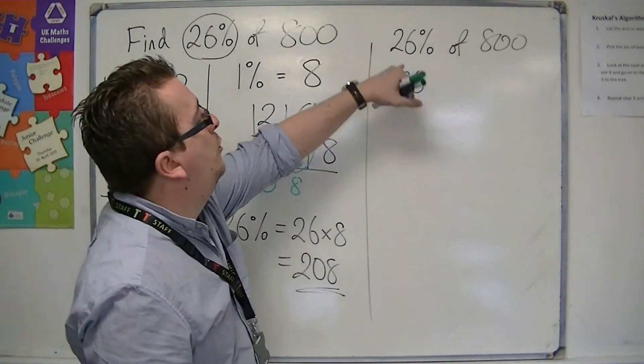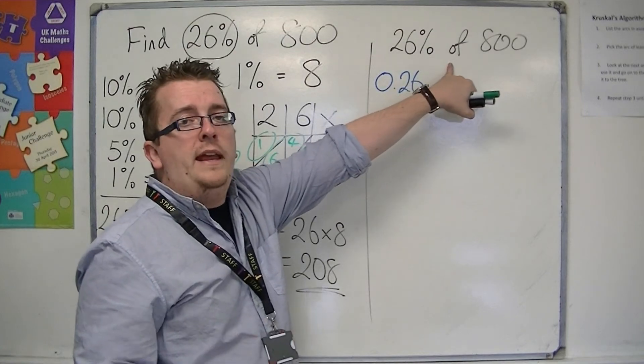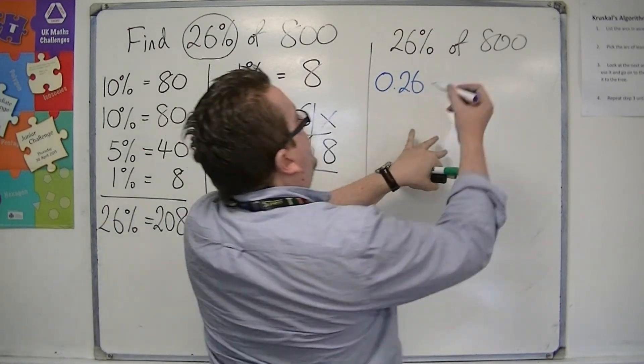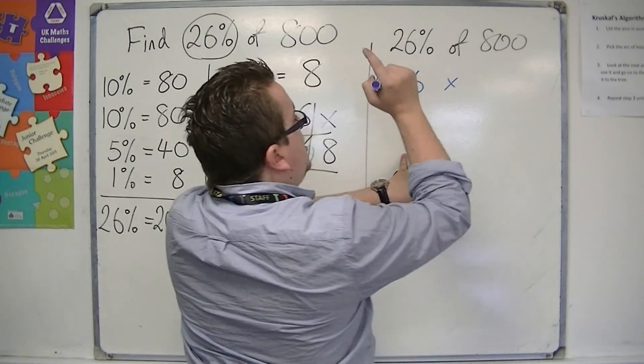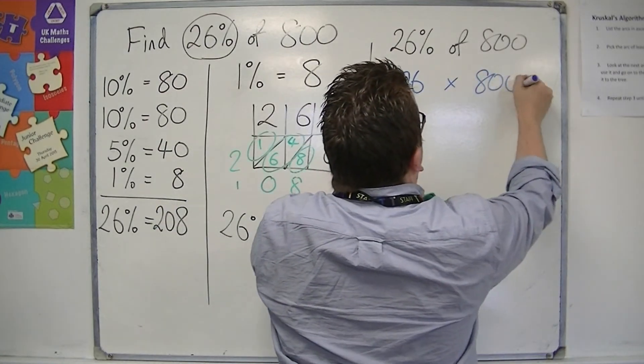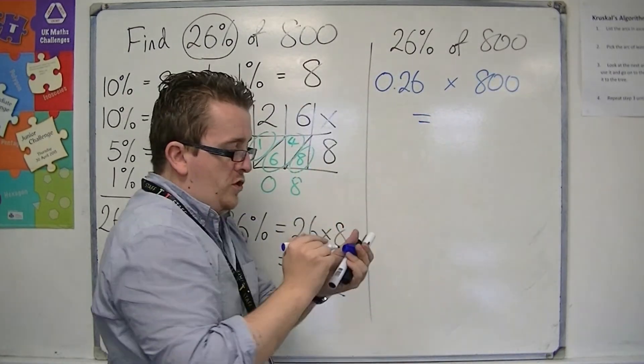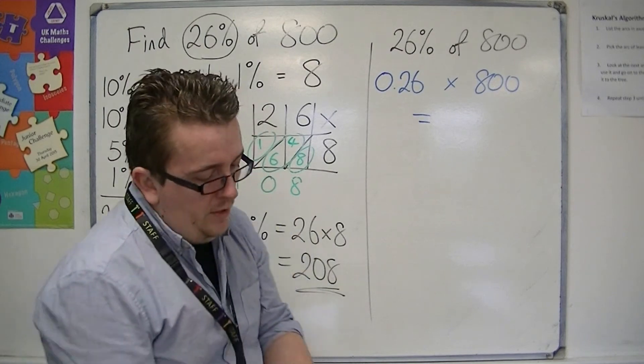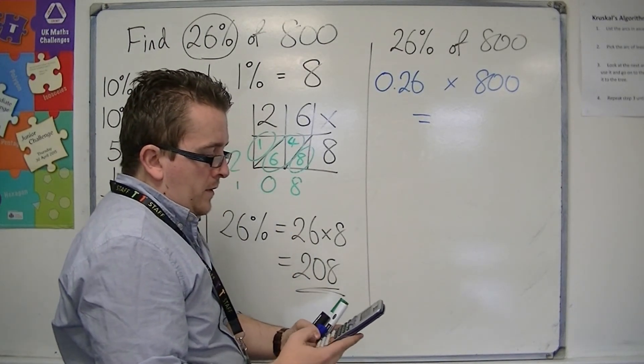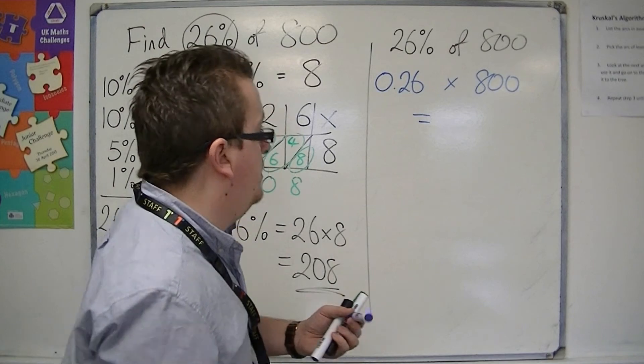So this is 0.26. The 'of' in maths means times, so 0.26 times 800. And that's what you do on your calculator. If you try it, you should get 208.